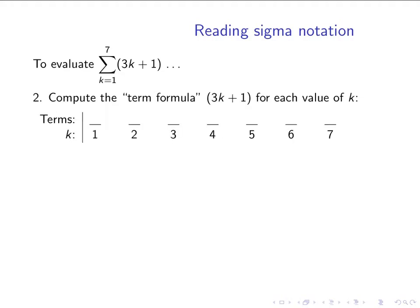Step 2 is compute the term formula for each value of k. So for k equals 1, the term formula 3k plus 1 would be equal to 4. When k equals 2, we would get 7. And finally, when k equals 7, if we plug 7 in for k into the term formula, 3k plus 1, we'll get 22.